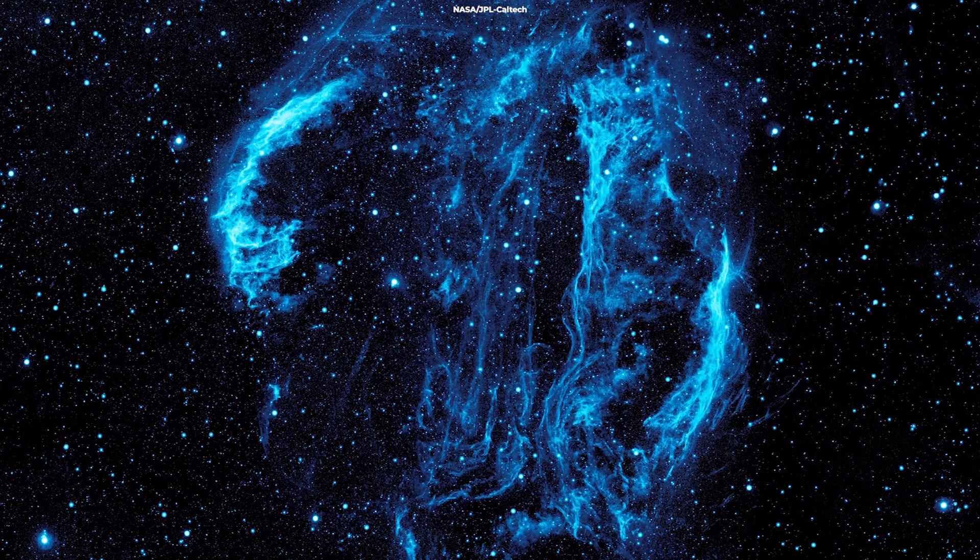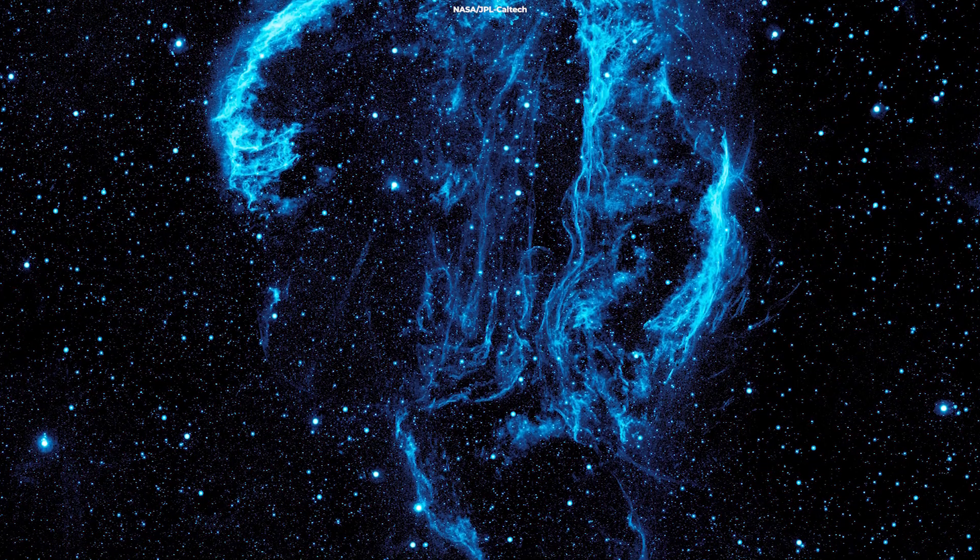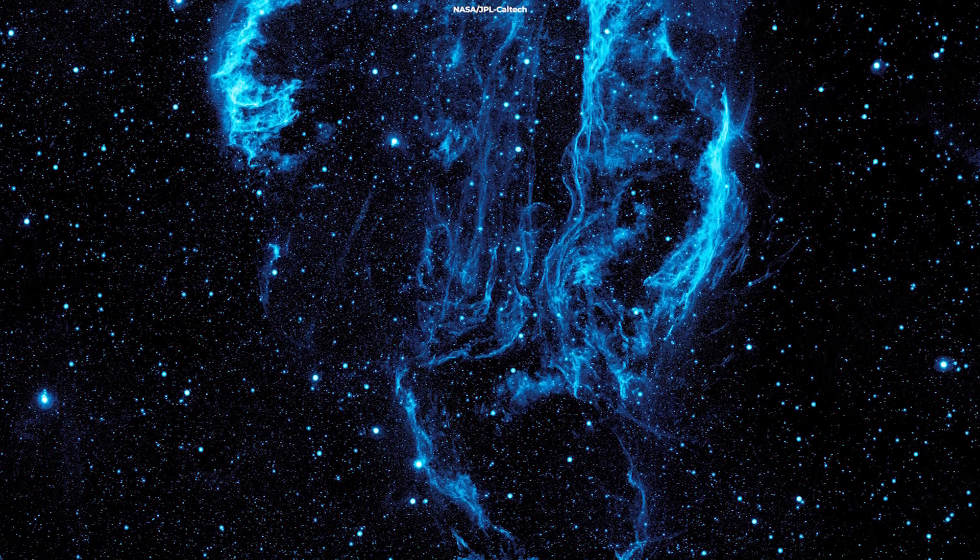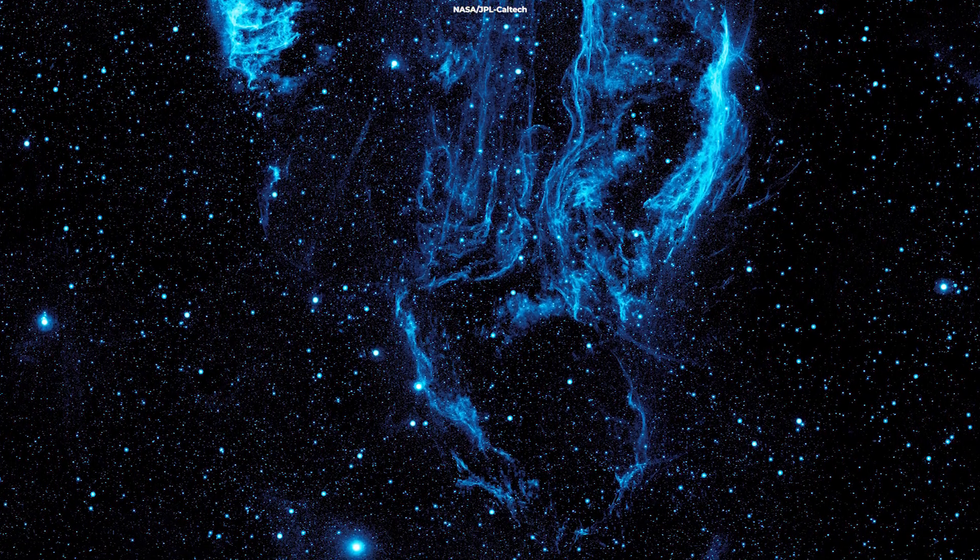The Veil Nebula is the visible portion of the nearby Cygnus Loop, a supernova remnant formed about 10,000 years ago by the death of a massive star, 20 times the mass of the Sun.